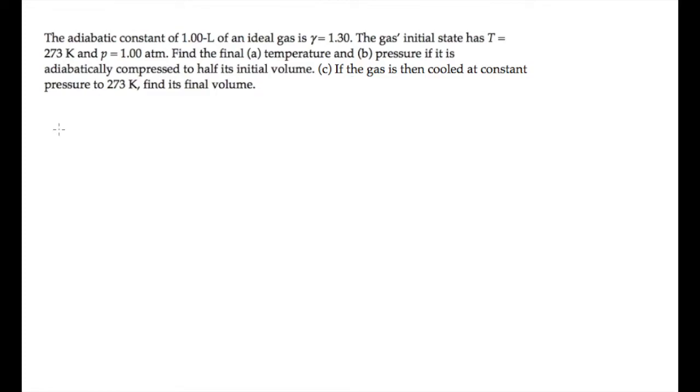The gas in this problem goes through an adiabatic compression to half its initial volume. For an adiabatic process, we know that PV to the gamma is a constant, so PI VI to the gamma equals PF VF to the gamma, where gamma is the ratio of specific heats, constant pressure to constant volume. We're told in this case that equals 1.30.